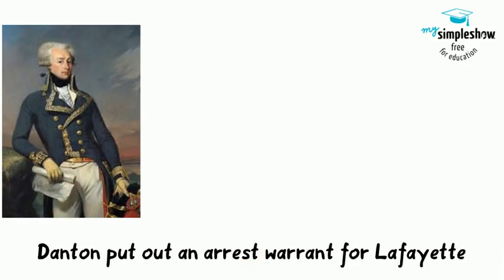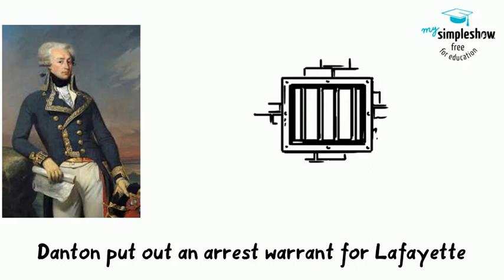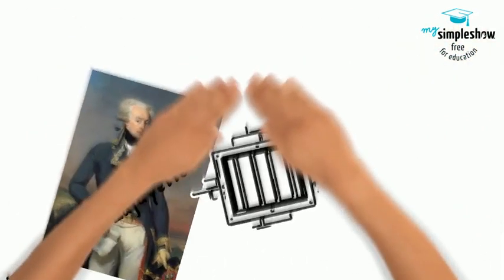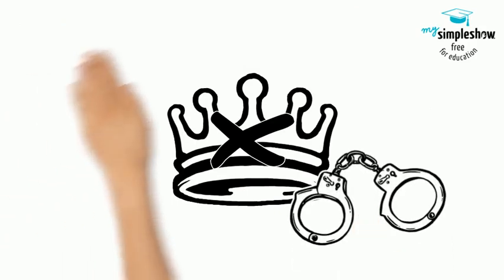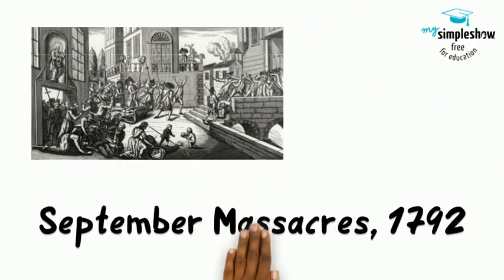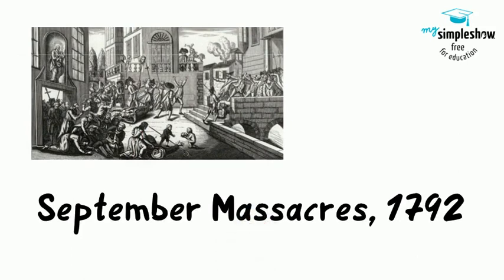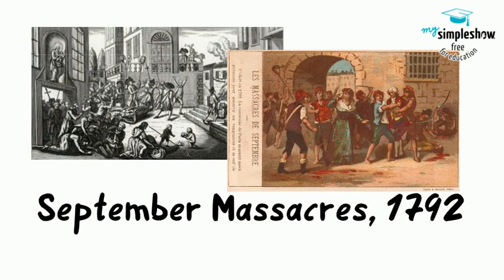Danton took out an arrest warrant on Lafayette, and the Jacobins were going to have him killed. He escaped and ended up in jail in Austria. The monarchy was officially done, and the arrests began. Radicalized citizens saw the course of justice against the traitors of the revolution as too slow, and in September they attacked the prisons. More than a thousand political and regular prisoners were killed in the September massacres.